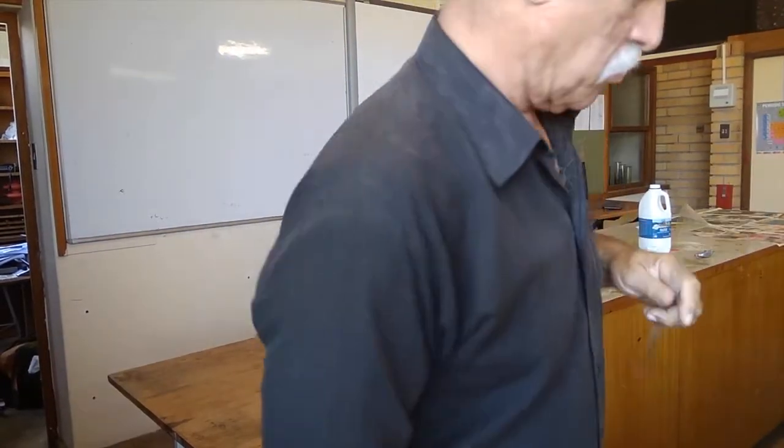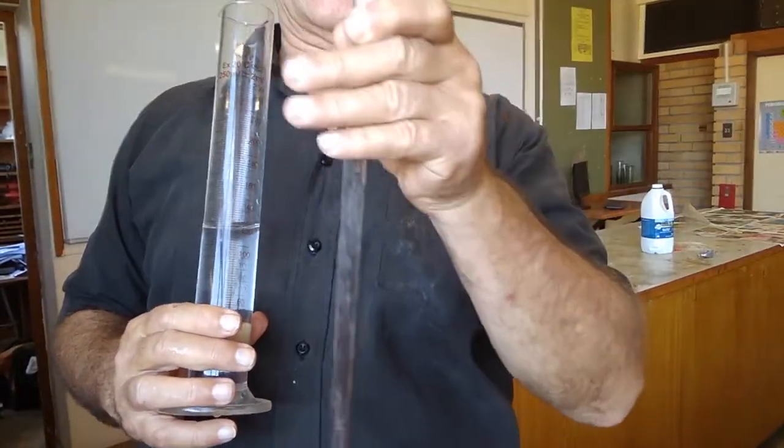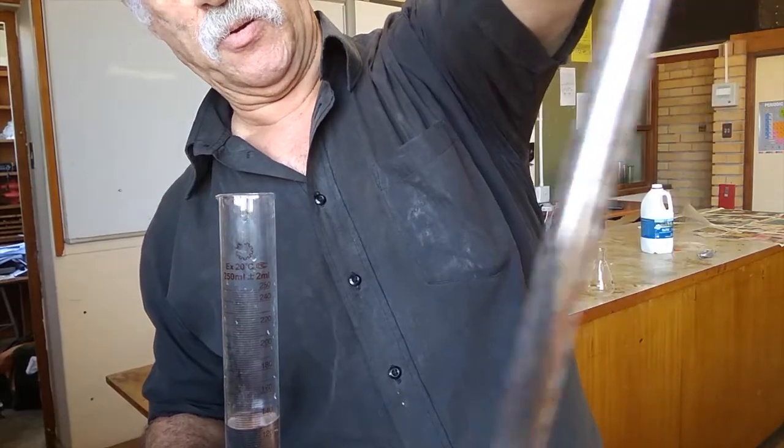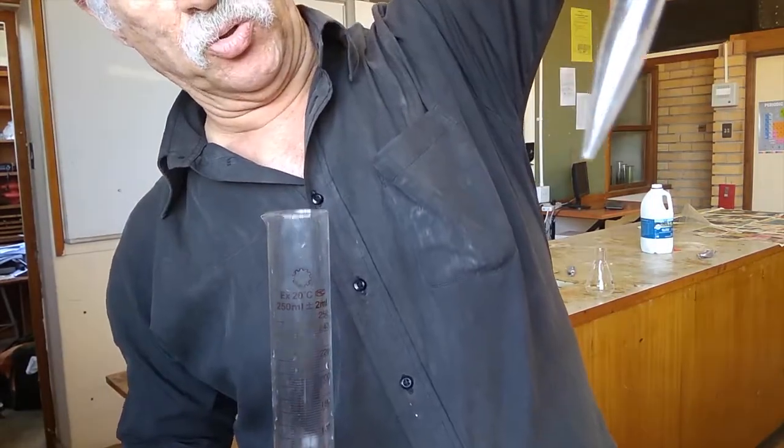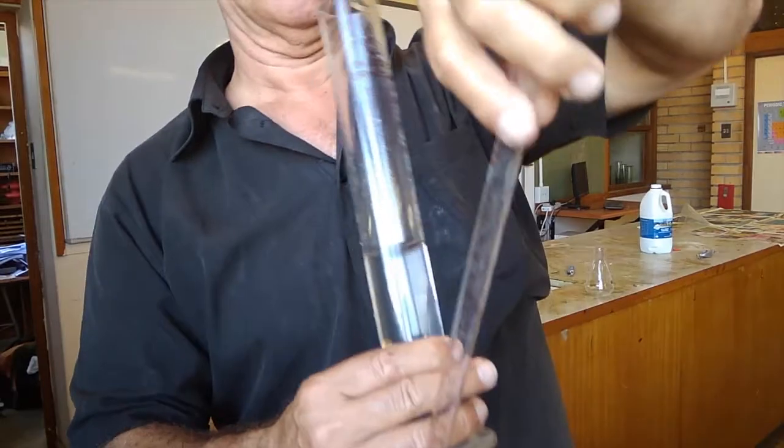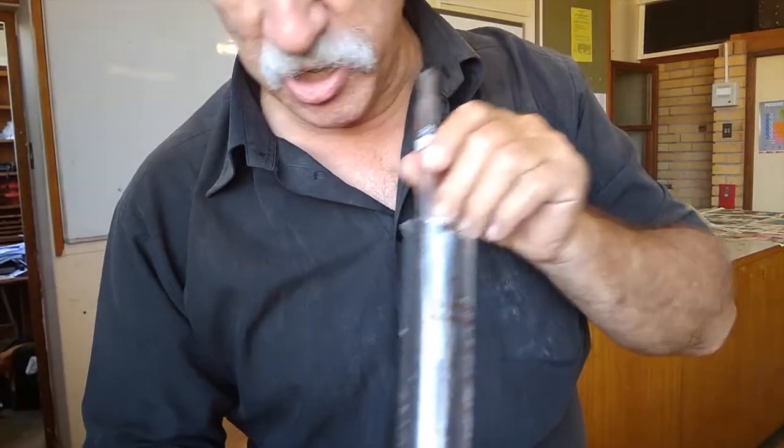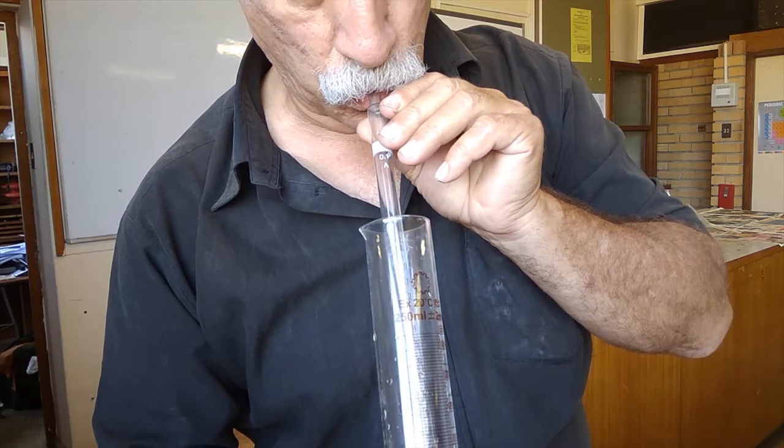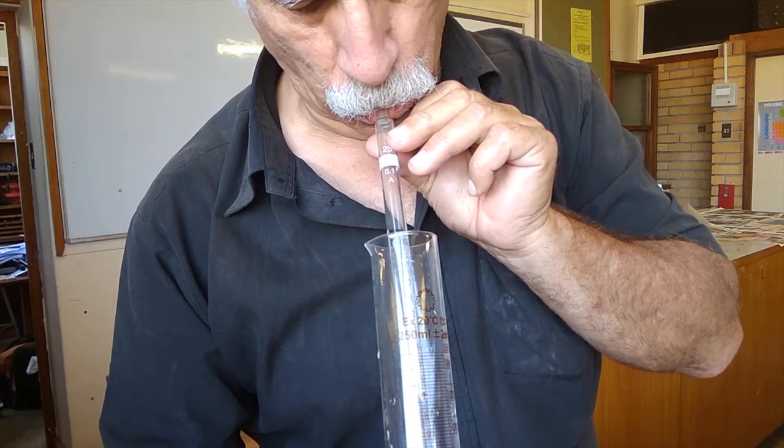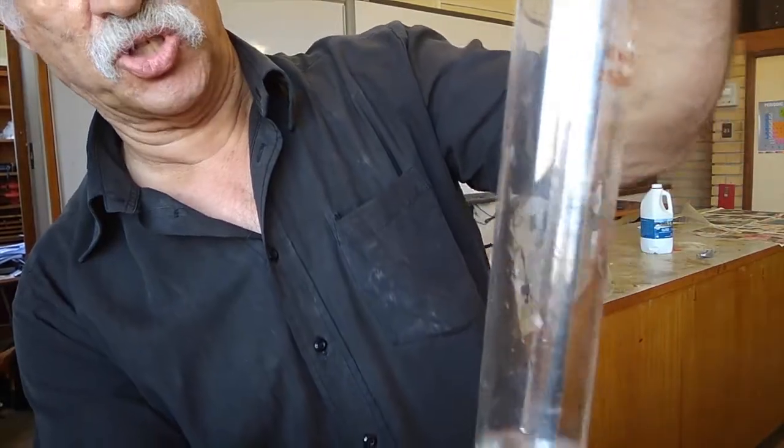Now we have something here called a pipette. The pipette has a zero mark there and goes up to 25, so this is a 25 milliliter pipette. We're going to put the pipette into the oxalic acid and very carefully suck on it. Notice you've got to be careful not to lift the tip out of the water.